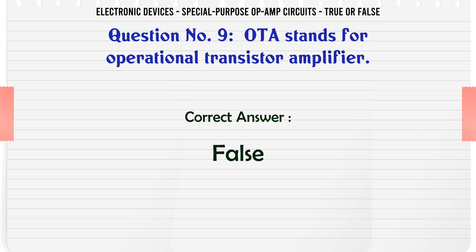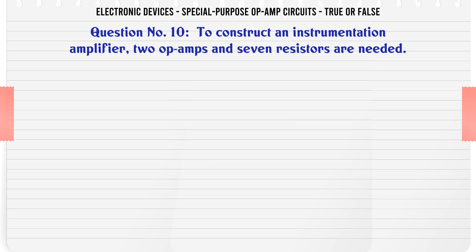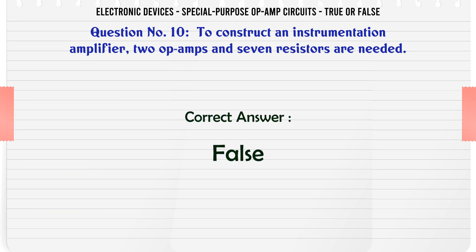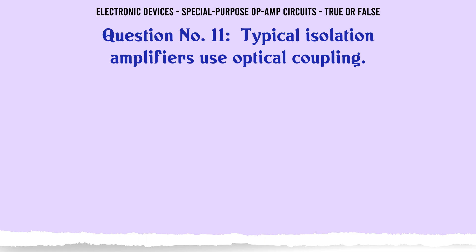To construct an instrumentation amplifier, 2 op-amps and 7 resistors are needed. A. True. B. False. C. D. The correct answer is False.